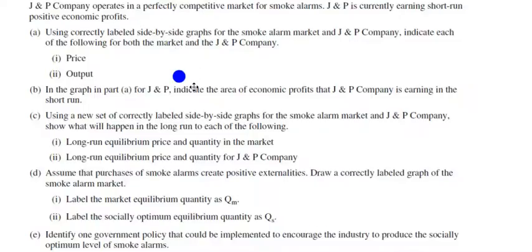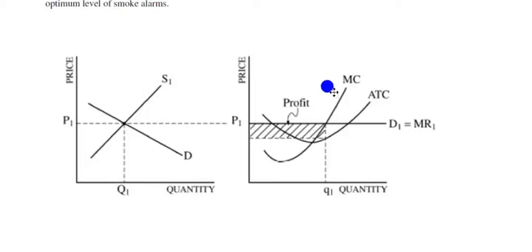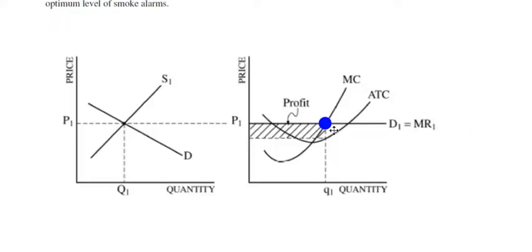The first set of graphs should look something like this: the firm on the right, the market on the left. We have our upward sloping supply and downward sloping demand. The market price and quantity equilibrium extends over to the firm as the price line, which also equals marginal revenue and average revenue. We draw in our marginal cost curve, and where marginal cost equals demand — that's where we produce. That quantity is where MC equals demand equals MR equals AR.